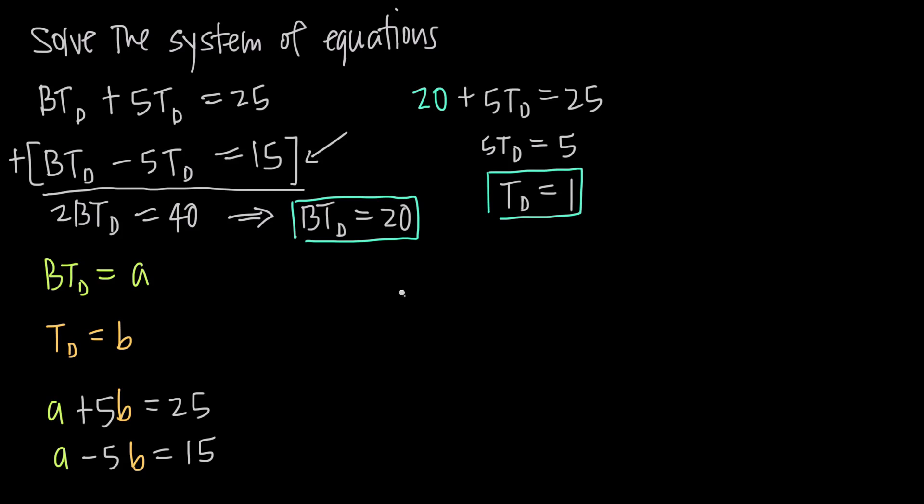So we say BT sub D is 20, so we plug that in here for BT sub D. We get 20 minus 5 times T sub D, which we know is 1, equals 15.